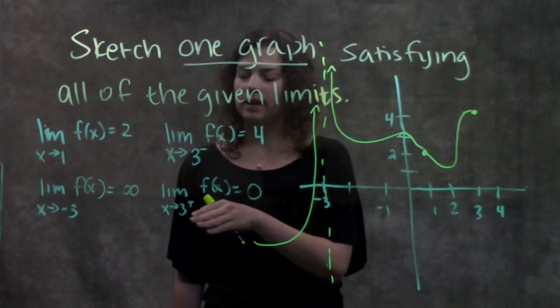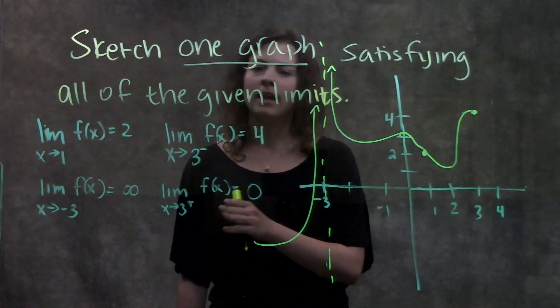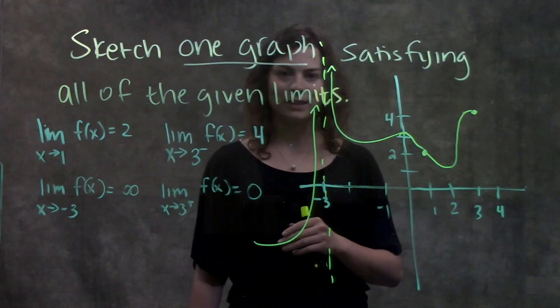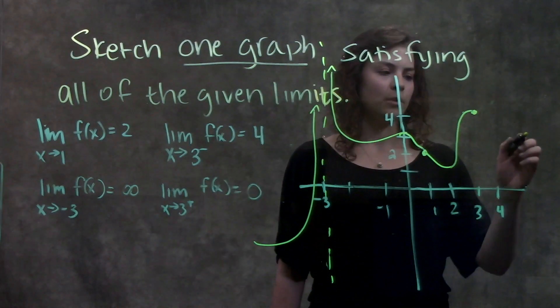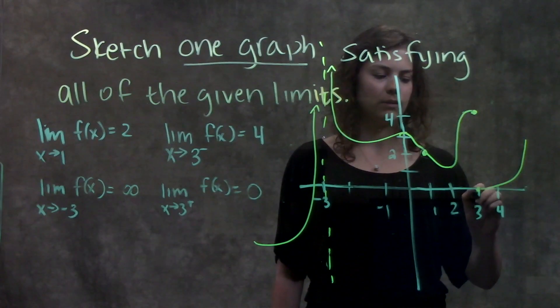Then our last one says the limit as x approaches 3 from the right-hand side of f(x) is equal to 0. 3 from the right-hand side is going to 0.